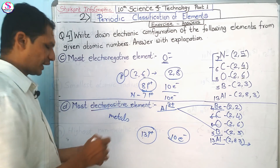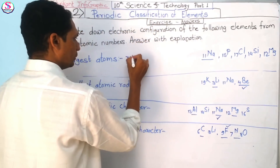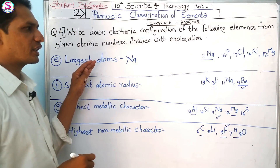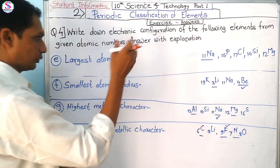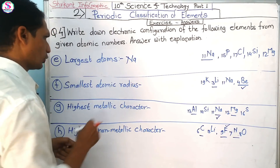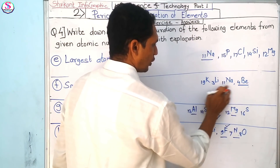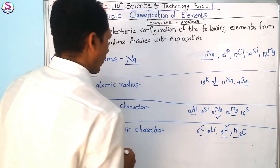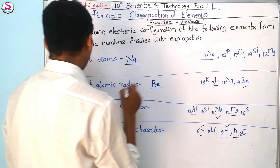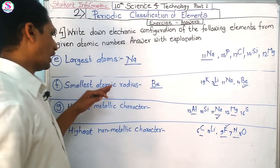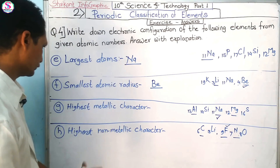The largest atom among third-row elements is sodium, because atomic size decreases from left to right as the number of protons increases. The smallest atomic radius among the given elements is beryllium, because atomic size decreases from left to right as electron number increases.